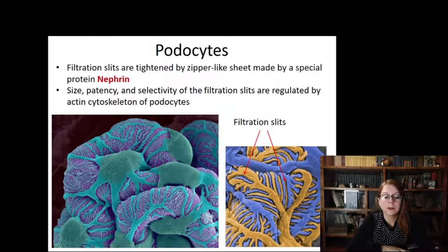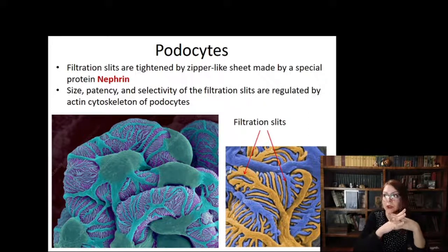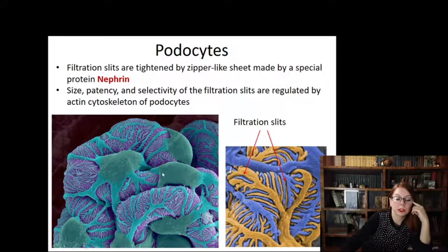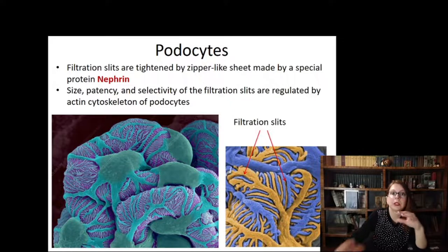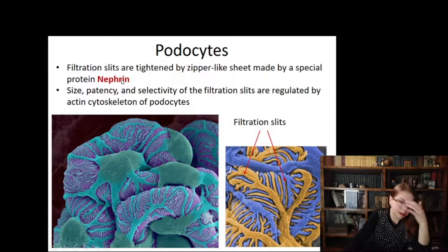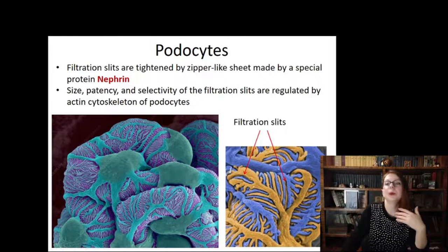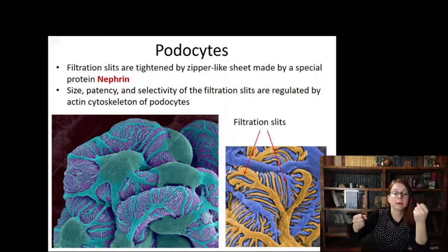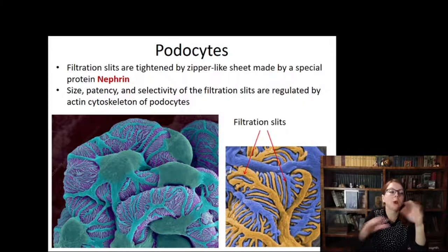The third component of the barrier are the filtration slits between the podocyte legs. Once the endothelium and basement membrane are crossed, particles encounter the slits between the podocyte legs. As shown, there are slits between processes covered with diaphragms — these are not empty but tightened with a nephrin zipper-like structure. The permeability of those slits depends on the cytoskeleton of the podocytes: if podocytes tighten the diaphragm, permeability increases; if relaxed, it decreases slightly, allowing podocytes to regulate filtration activity.